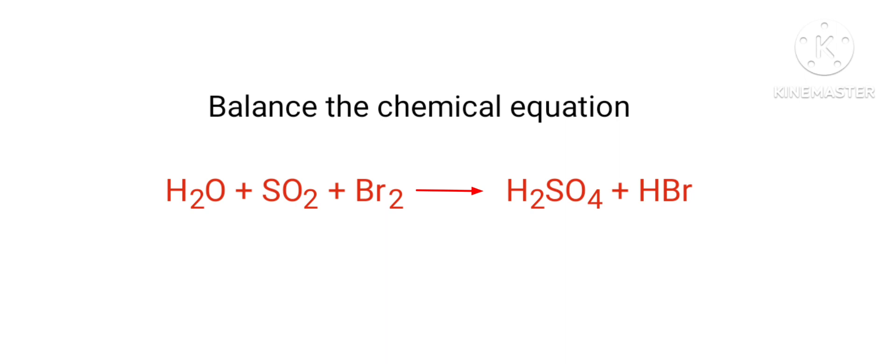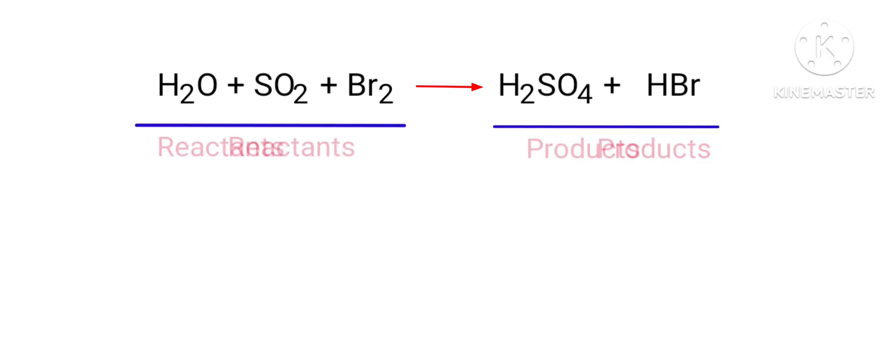Balance the chemical equation. Water plus sulfur dioxide plus bromine gives us sulfuric acid plus hydrogen bromide. In this equation, the reactants are water, sulfur dioxide, and bromine, and the products are sulfuric acid and hydrogen bromide.